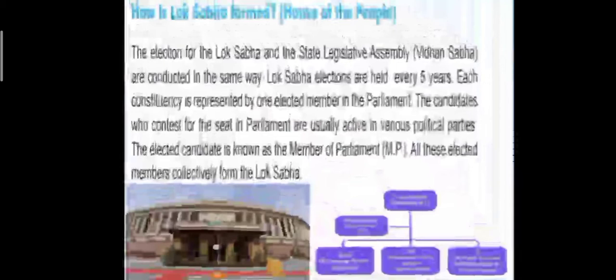Lok Sabha is the lower house, or the house of the people. It is a people's representative body where members are directly elected by the people. A total of 552 members are there in the Lok Sabha: 530 members are from the states, 20 members from union territories, and 2 members are nominated by the President from the Anglo-Indian community. The country is divided into constituencies based on population. The term of Lok Sabha is 5 years and it can be dissolved by the President in case of emergency.